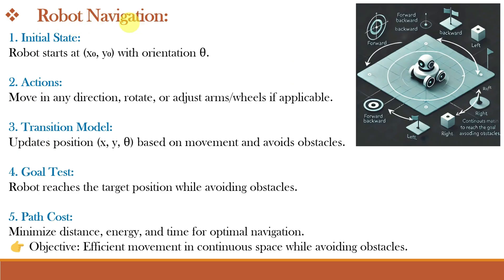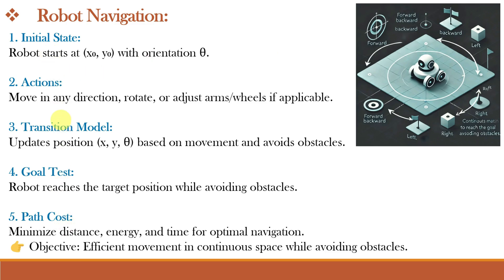The next example is the robot navigation problem. Robot navigation is a generalization of the route finding problem. Rather than a discrete set of routes, a robot can move in a continuous space with an infinite set of possible actions and states. For a circular robot moving on a flat surface, the space is essentially two-dimensional. But when the robot has arms and legs or wheels that also must be controlled, the search space becomes multidimensional, and advanced techniques are required to make the search space finite. The main objective is the efficient movement of the robot in a continuous space while avoiding obstacles.